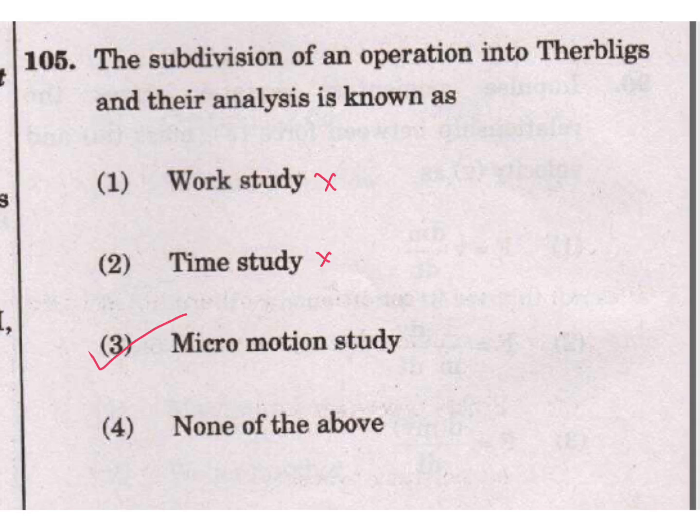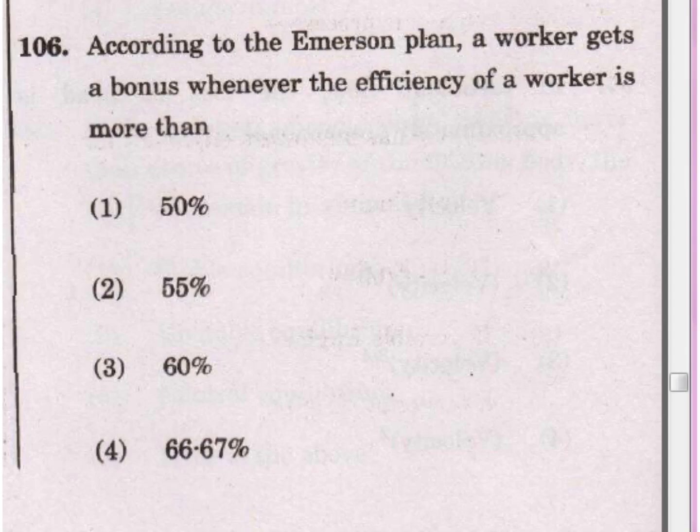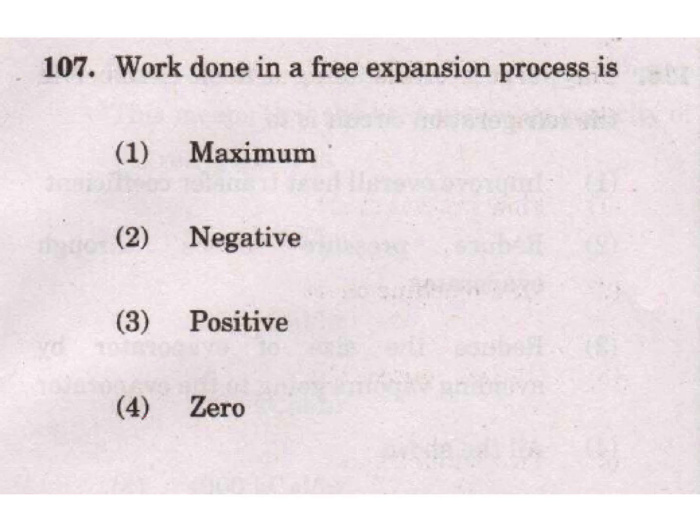Question 106: According to the Emerson plans, a worker gets a bonus whenever efficiency of a worker is more than 1. 50%, 2. 55%, 3. 60%, 4. 66.67%. Question 107: Work done in a free expansion process is zero. This is also important for other exams.